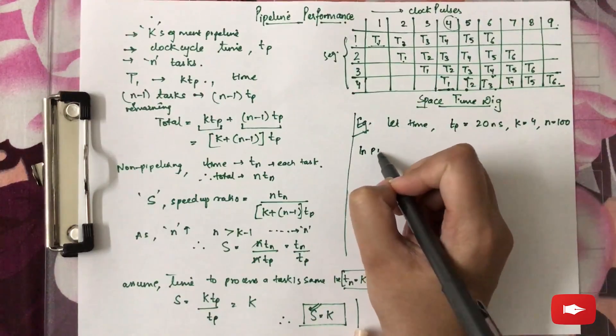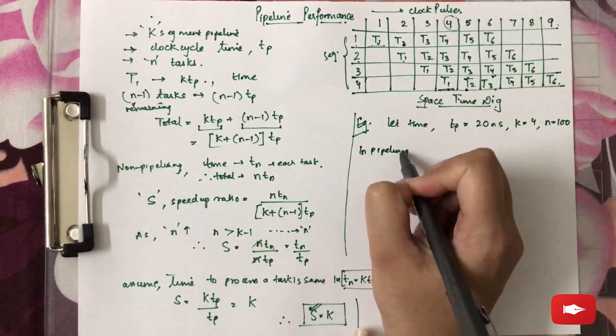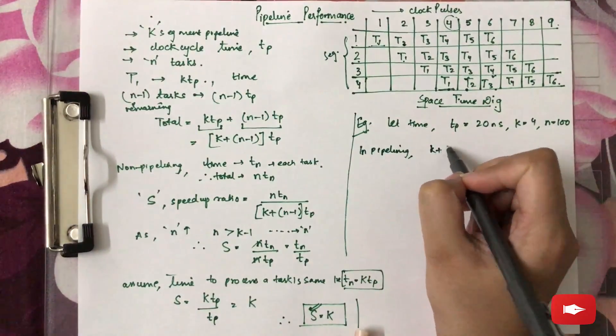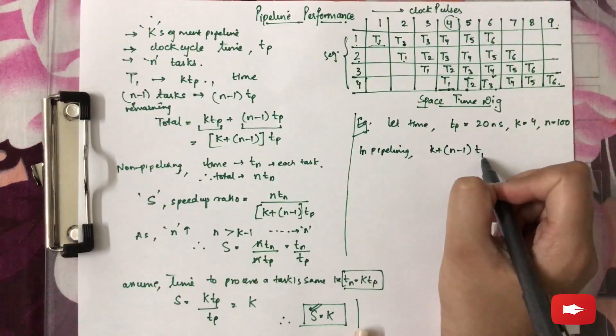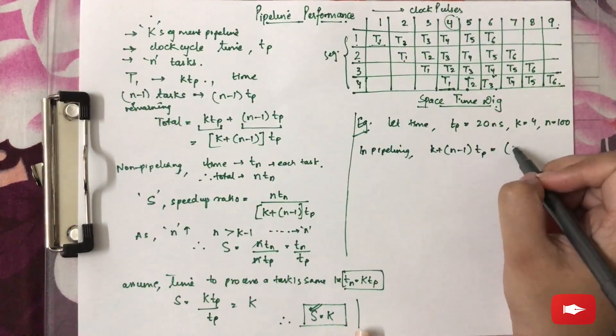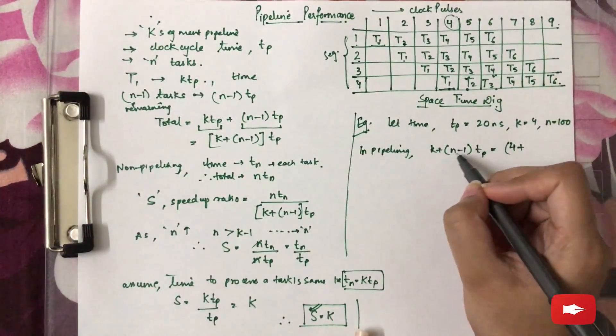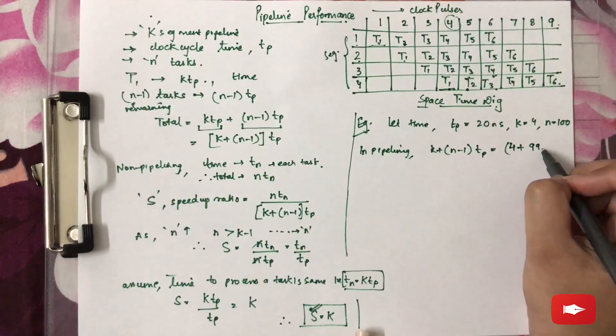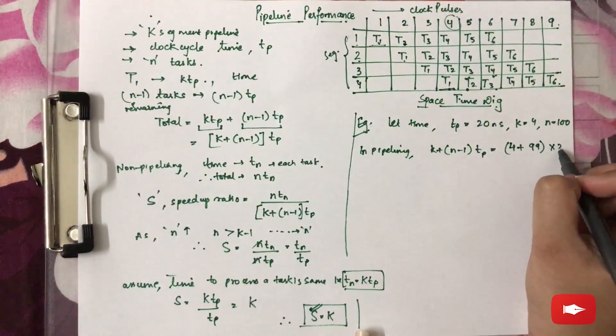In the pipelining process, we have total time (K+N-1)TP, which will be equal to 4 plus 100 minus 1, 99 TP is 20.